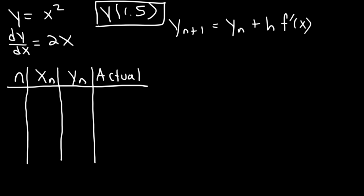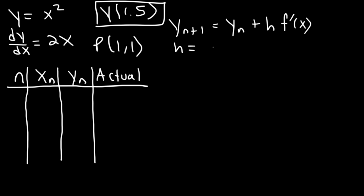Now let's estimate this value given an initial condition of (1, 1) with a step size of 0.1. So when n is 0, x sub 0 is 1 and y sub 0 is 1. That's the initial condition.